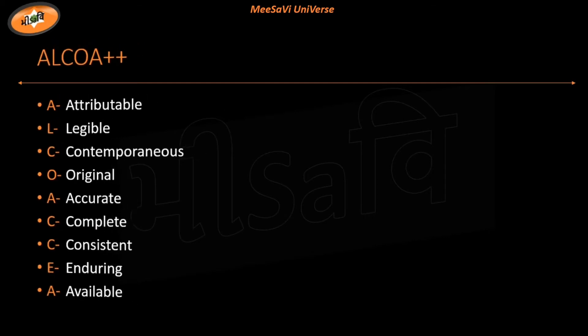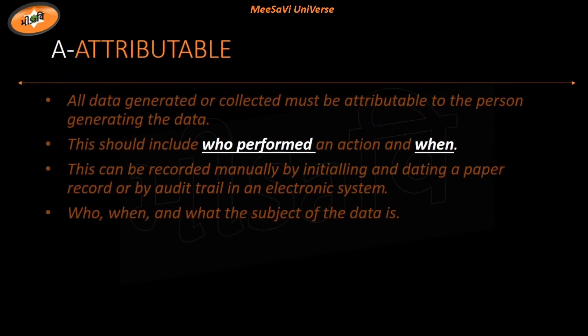What is A for Attributable? Who performed and when it was performed are the attributes. This can be achieved by audit trail. Through the software's audit trail, data becomes attributable.